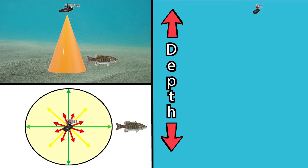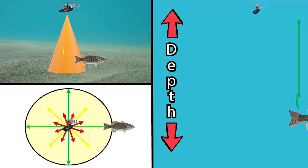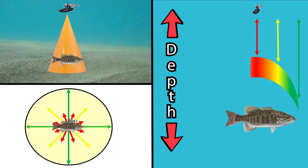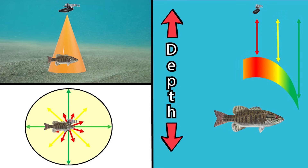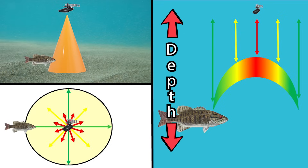The sonar sound wave timing to and from the target plays a vital role in the fish arch we see on our screen. Since our receiver uses sound wave timing to calculate the depth of an object, objects in the furthest reaches of the sonar cone will appear slightly deeper in the water column due to the increased travel time. As the object moves directly under the transducer, the sound wave time is shorter and the object appears higher in the water column. The fish arch we see is the many data points processed by our fish finder throughout the object's entire motion through our transducer cone.